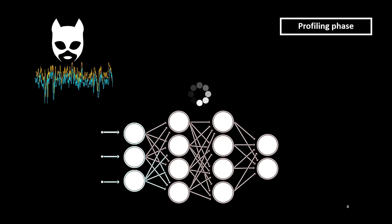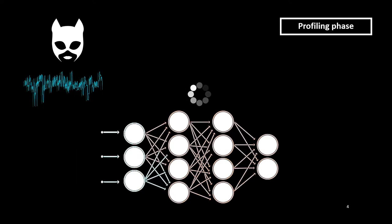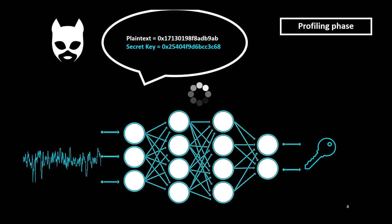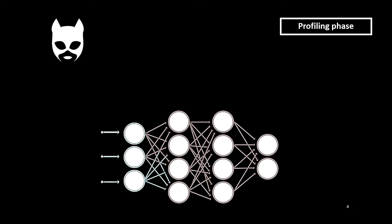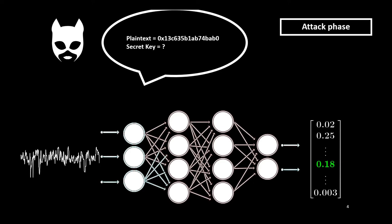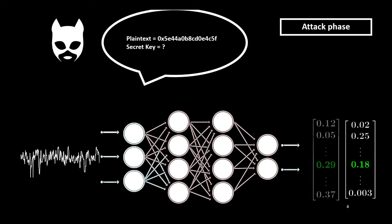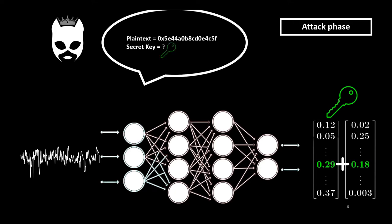In the profiling phase, the adversary trains a neural network to predict the correct sensitive information she knows based on the physical traces. When this phase is performed, the adversary can predict the intermediate variable on a target device containing a secret she wants to retrieve. During the attack phase, by using a new set of physical traces, she can compute the probability of observing each key hypothesis. Unfortunately, one physical trace is not enough to retrieve the correct targeted value. Hence, the adversary has to predict the score related to each key hypothesis multiple times to finally aggregate all the predictions and recover the secret key value.